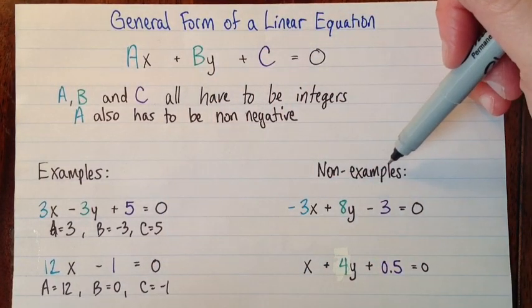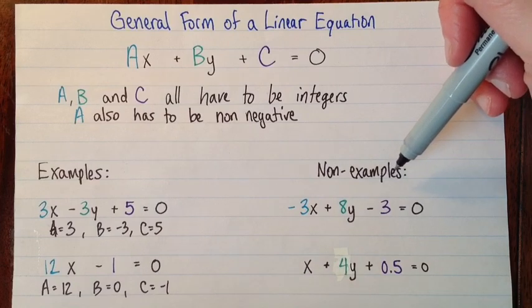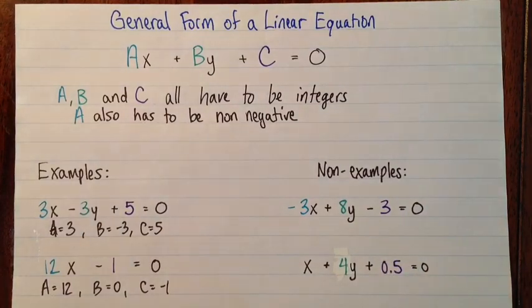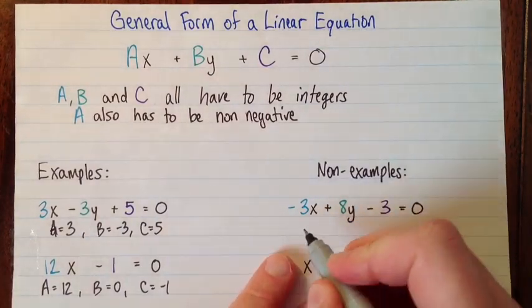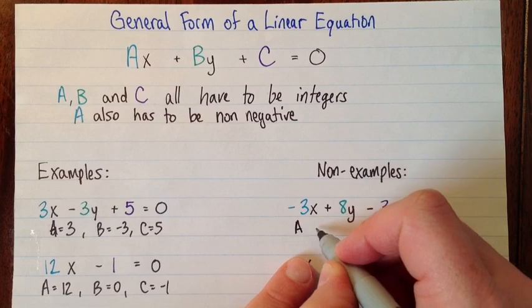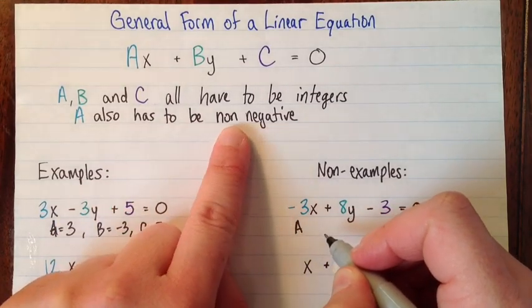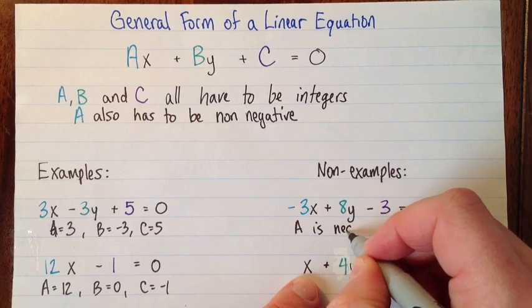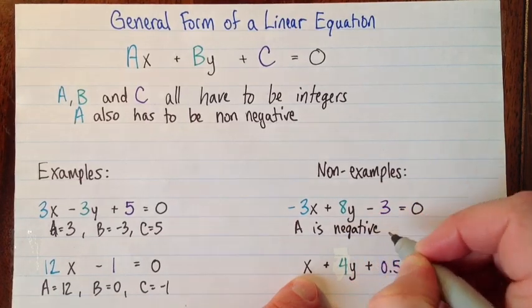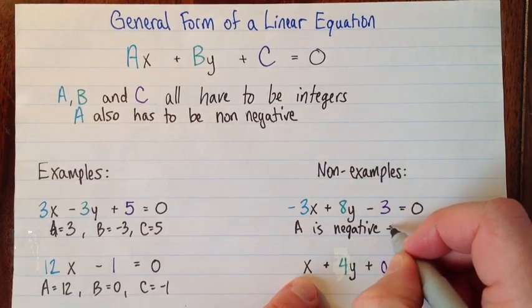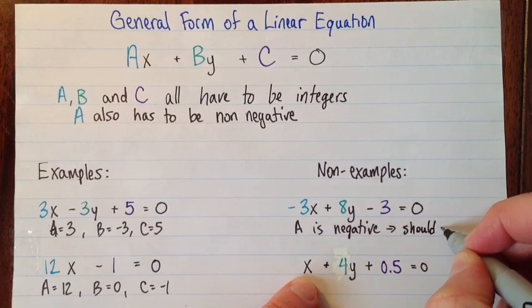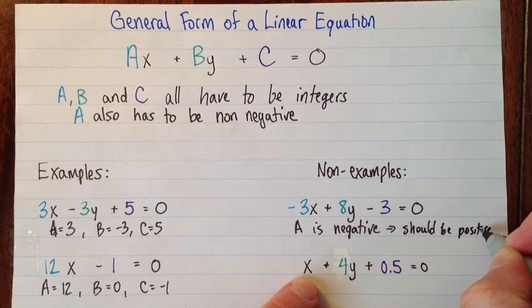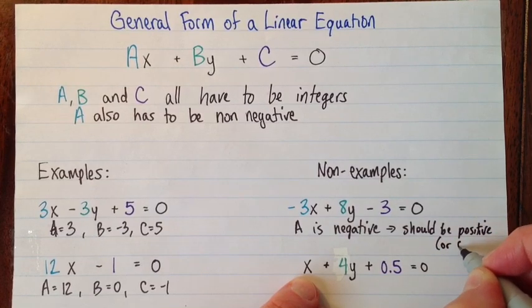Here are some non-examples. These are perfectly good equations, but they're just not general form. So here, with -3x + 8y - 3 = 0, the problem here is that A has to be non-negative, so that means positive or zero. Here, the problem is that A is negative. It should be positive, usually, or it could be zero.